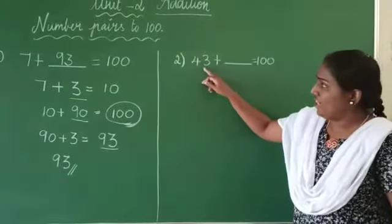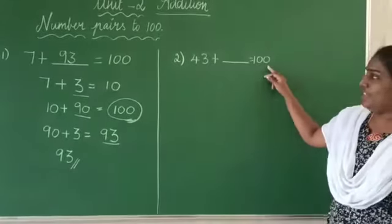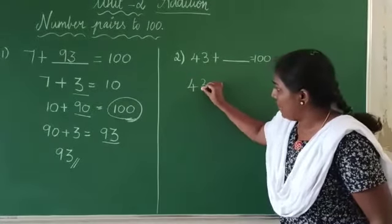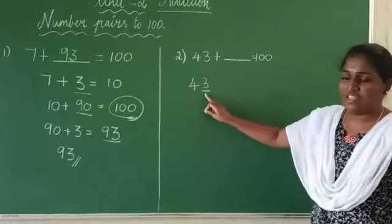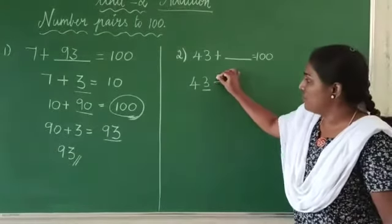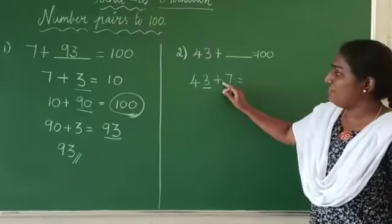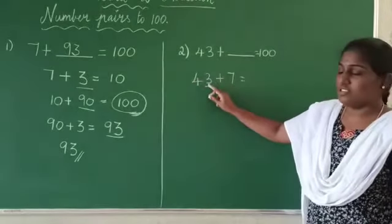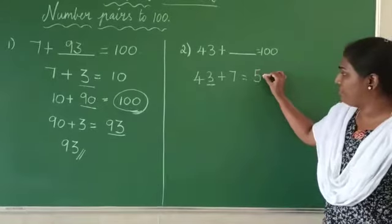See listen here, 43 plus dash is equal to 100. So as I already said, you have to take the number and you have to make this 1 space 0. For that you have to find the friend. So whose friend of 3? 7. So when you add a friend, you have to get this 1 space as 0. So now 43 plus 7 gives you 50.